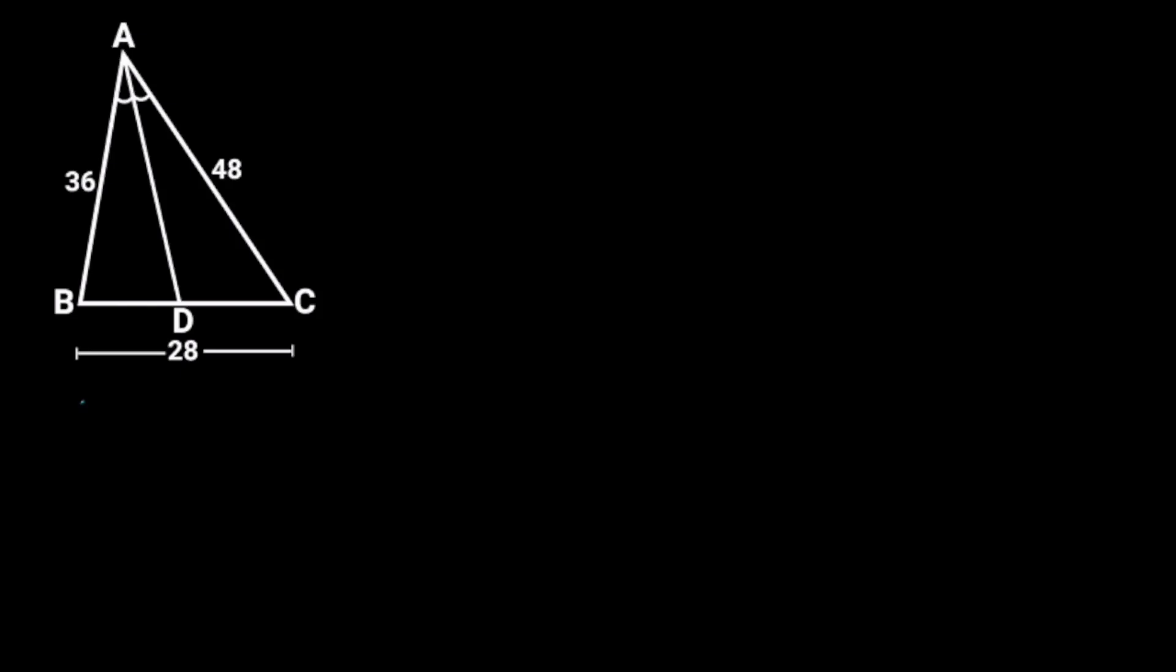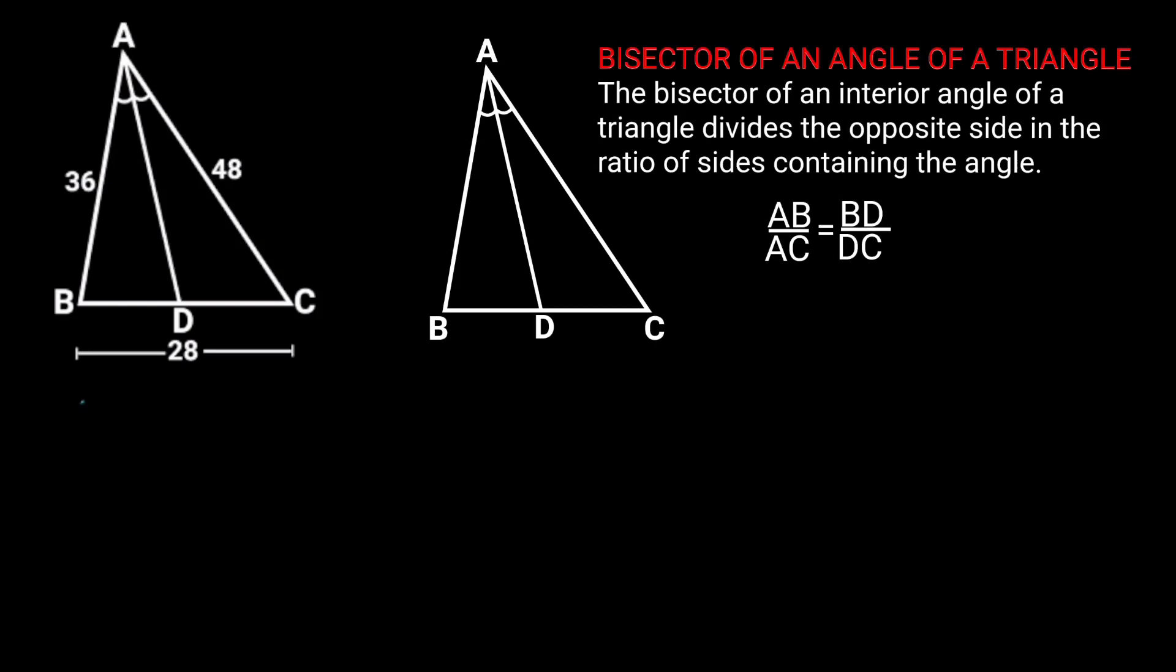To solve this problem, let's recall the bisector of a triangle theorem. It states that the bisector of an interior angle of a triangle divides the opposite side in the ratio of sides containing the angle.